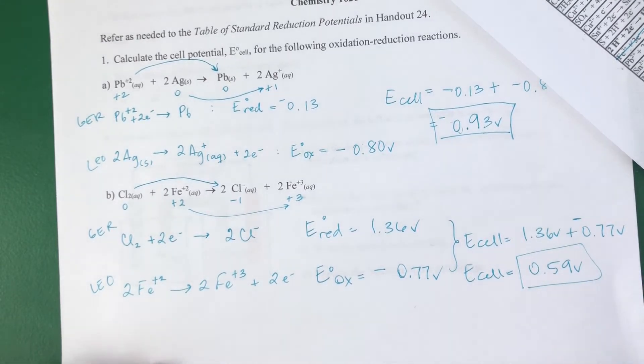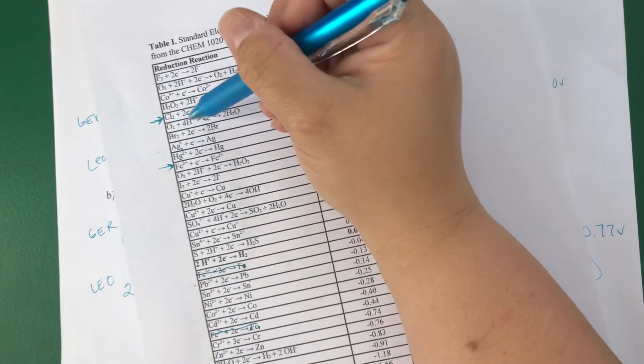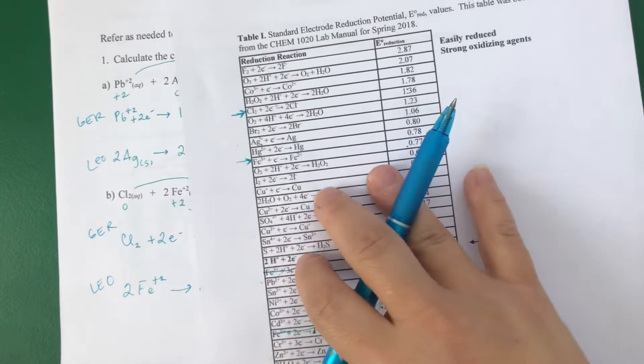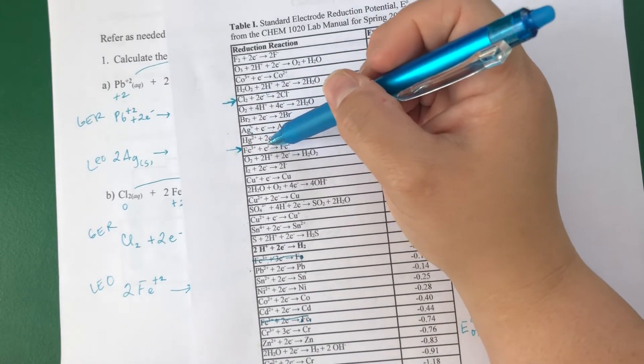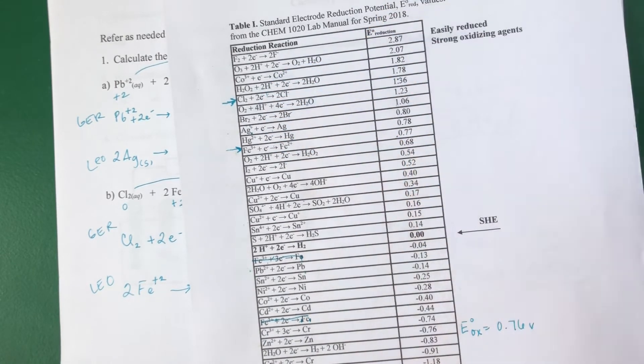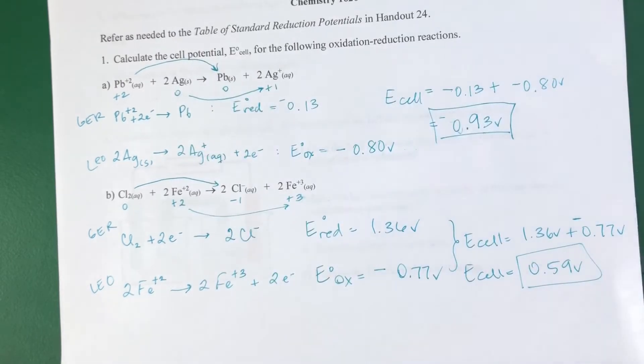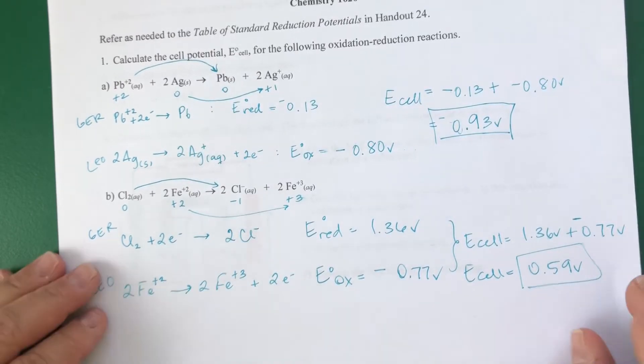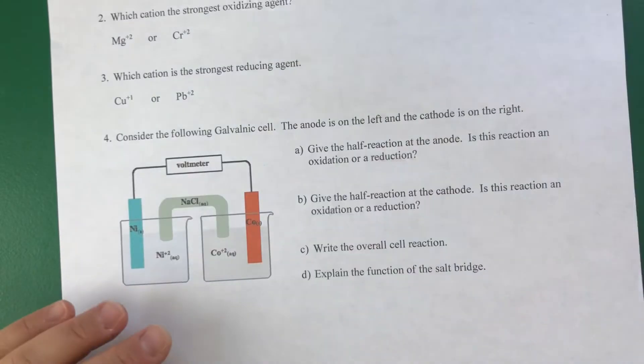This reaction is spontaneous. And you could tell because chlorine is, I have chlorine as a reduction, and it has a higher reduction potential, and my iron as the oxidation, and that's actually how it would work out. So this reaction is spontaneous as written. Okay, let's look at the second part.